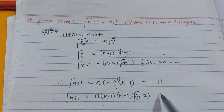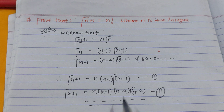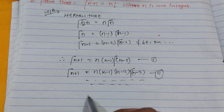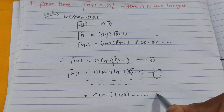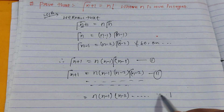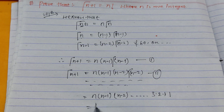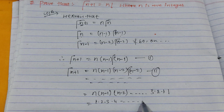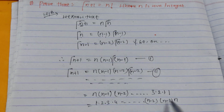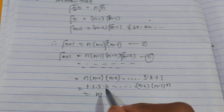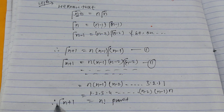Continuing this pattern, we get Gamma(n+1) equals n·(n-1)·(n-2)·...·2·1, which is 1·2·3·...·(n-2)·(n-1)·n, and this is known as n factorial. Hence proved that Gamma(n+1) equals n factorial.